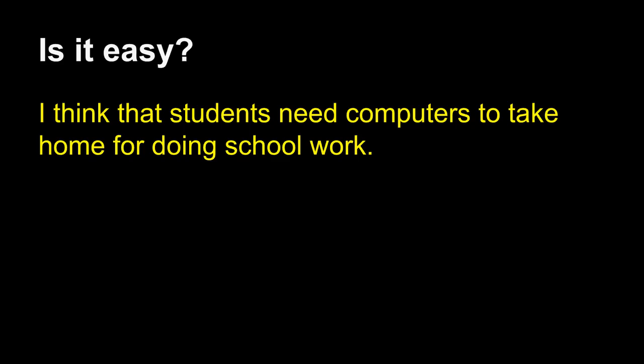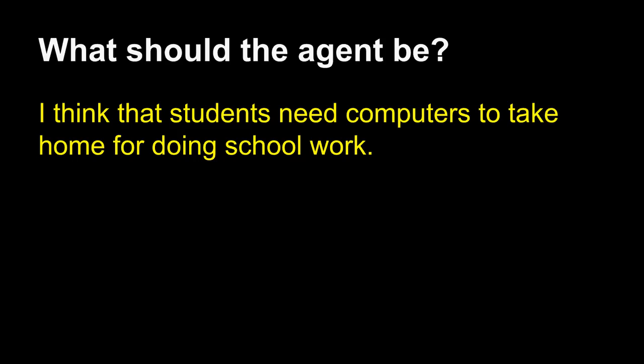Is it easy to write this? Well, yes, it should be. Let's take a look at a statement that is not very clear: "I think that students need computers to take home for doing school work." Obviously, this is a student's idea of an opinion, and it expresses their belief on a given subject. But it is not yet a formal claim. How do we make it a formal claim? Well, let's ask: what should the agent be? We must consider the responsible agent. Students? No — you are not actually asking the students to do anything. The responsible agent in this statement is implied, and that agent is responsible for the action. We will talk about providing computers to students. Who would do that? The school. Schools will be your responsible agent.